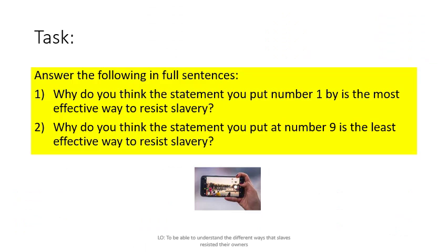Now that you've put numbers one to nine next to each statement, answer in full sentences — that is the most important part. Explain why the statement you ranked number one is the most effective way to resist slavery, and why the statement you ranked number nine is the least effective. This is your opportunity to show what you know and have learned. Allow about six or seven minutes to get this down properly.